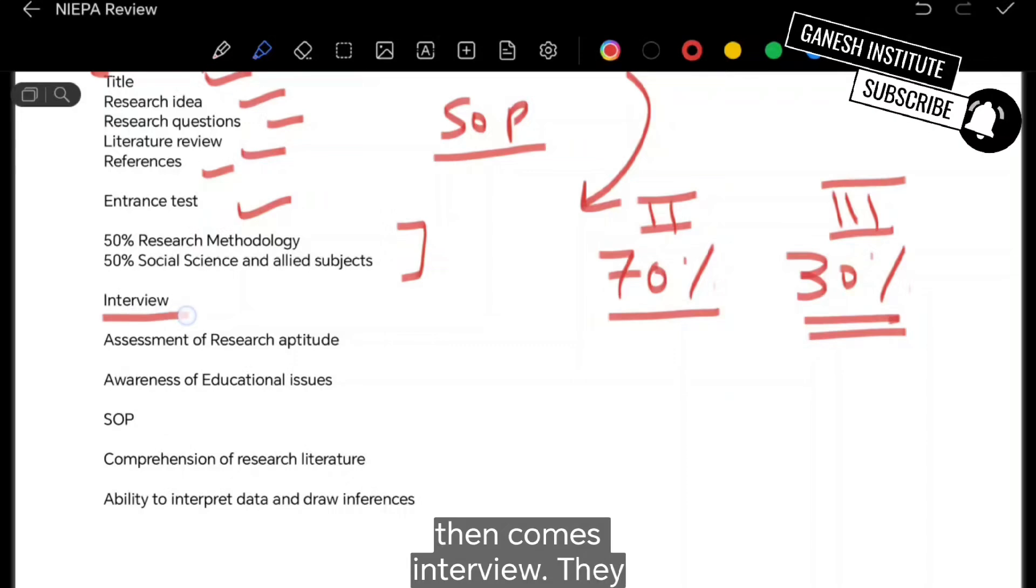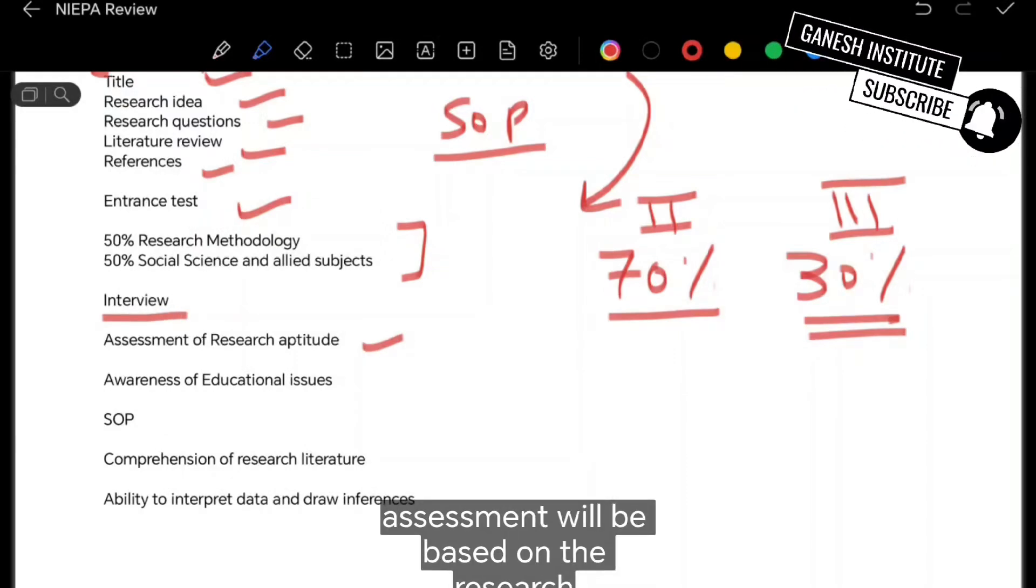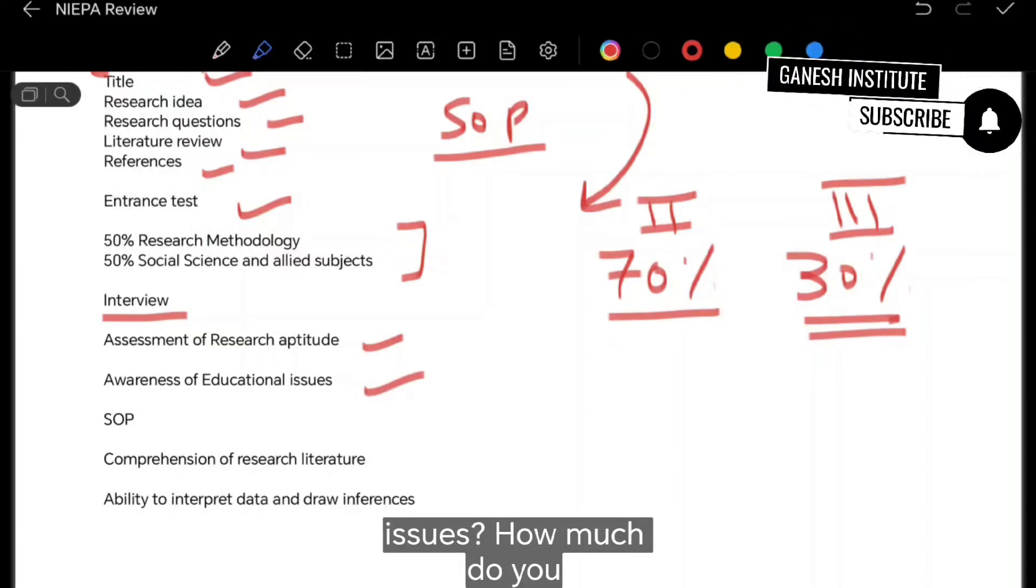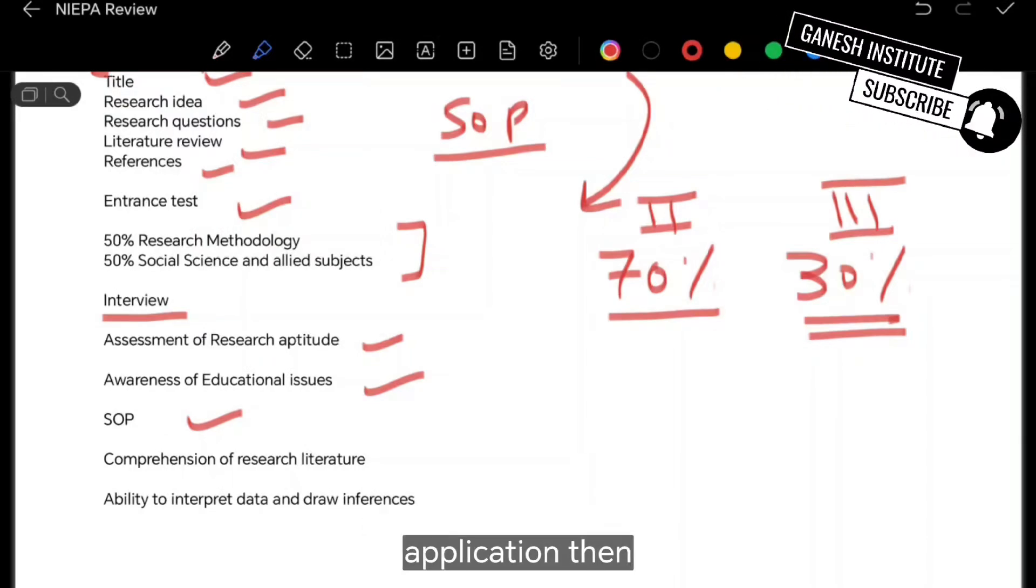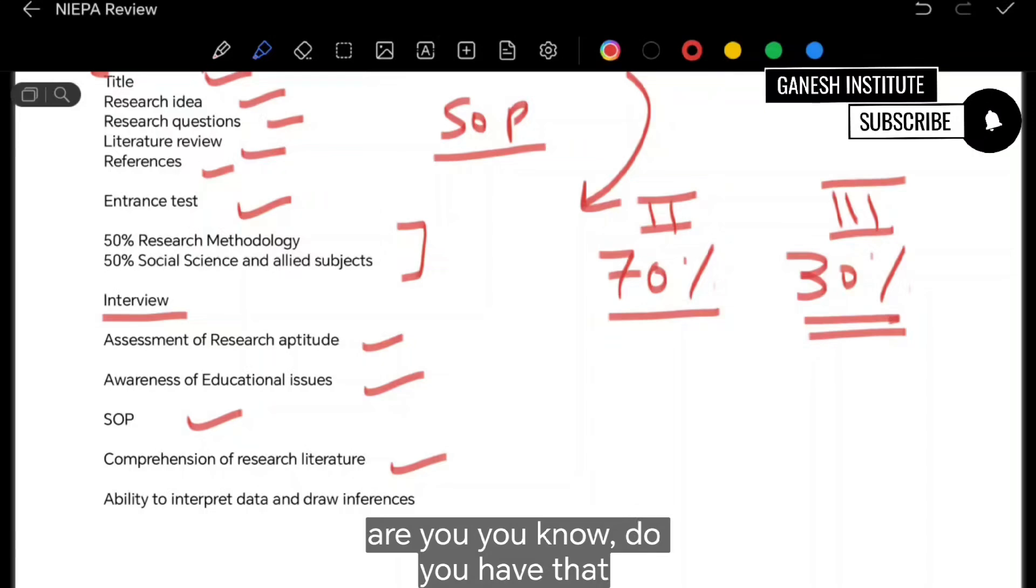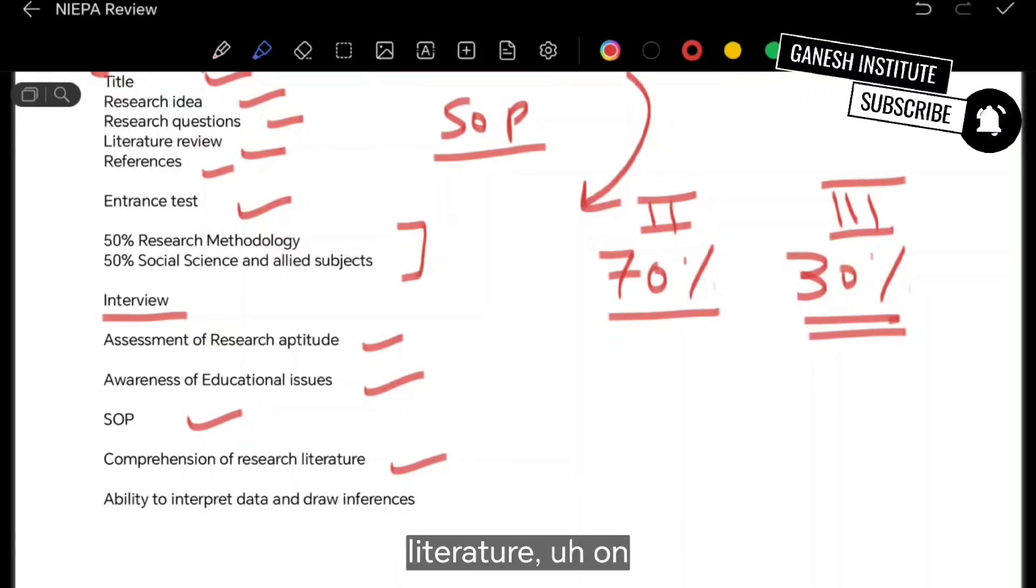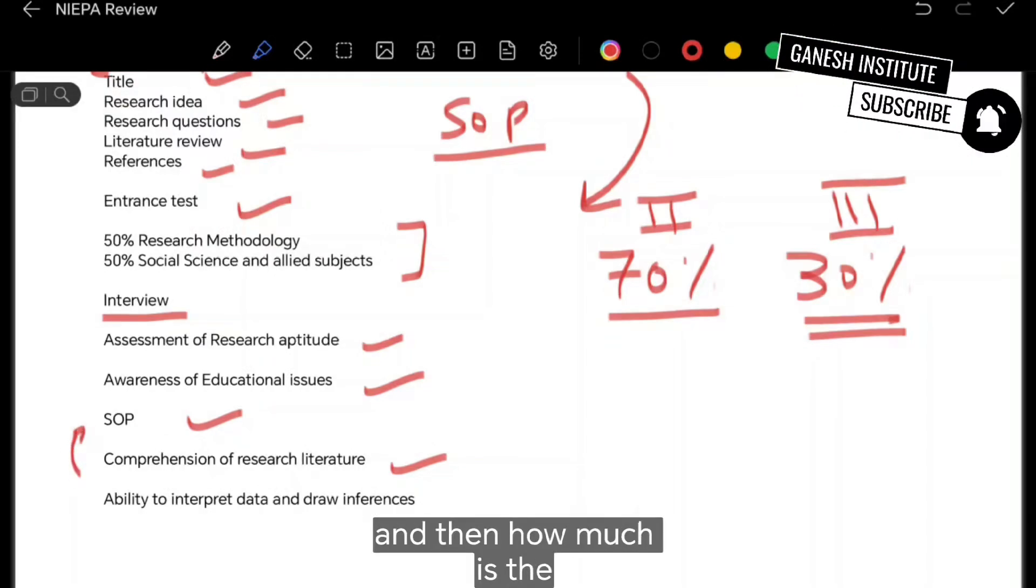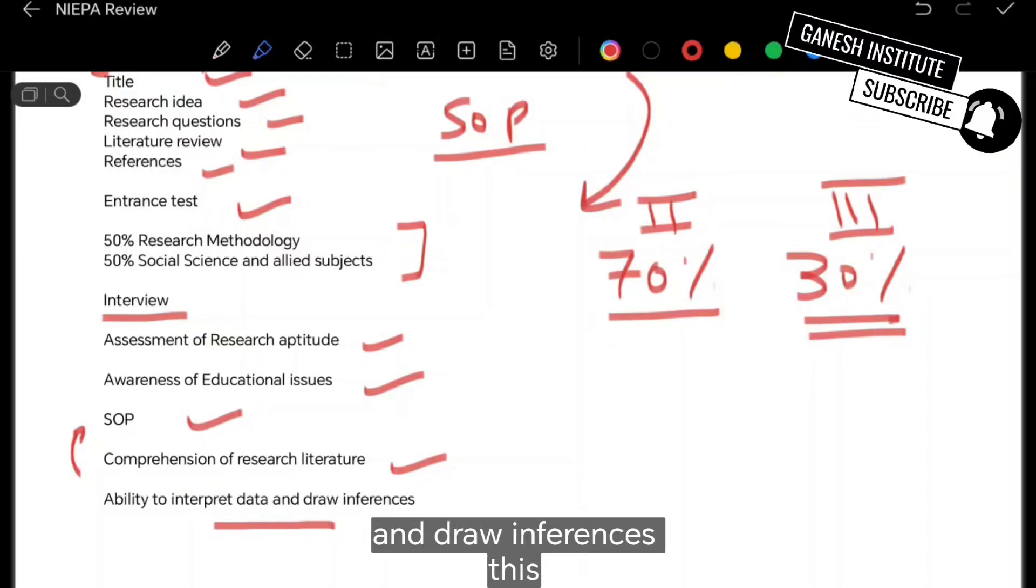Then comes interview. They have clearly mentioned that the assessment will be based on research aptitude, how much are you aware of educational issues, how much do you know about your SOP which you have prepared and submitted at the time of the application. Then do you have that comprehensive knowledge of research literature on which your SOP is based? And then how much is the ability of yours to interpret data and draw inferences?